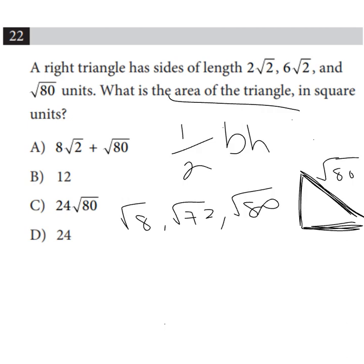So now, what is the area of the triangle? One-half times 2 times square root of 2 times 6 times square root of 2.